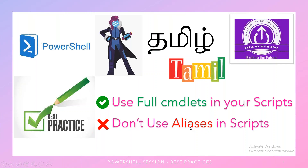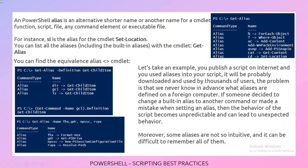In PowerShell, a commandlet, a function, a script, a file, any command element, an executable file — we can set an alternate name for any of these. For example, we can set an alias for Get-Content.